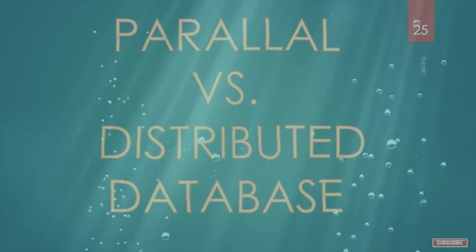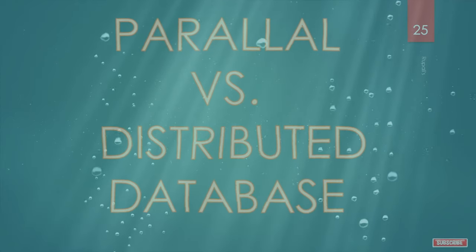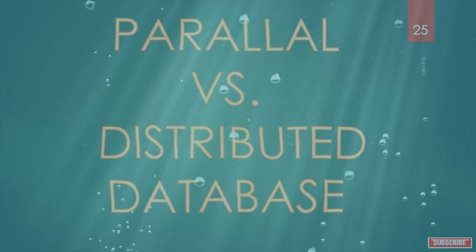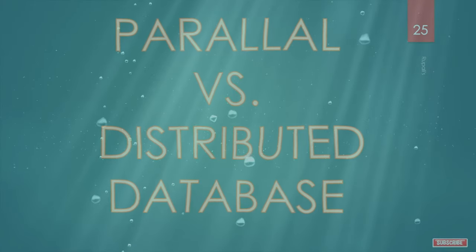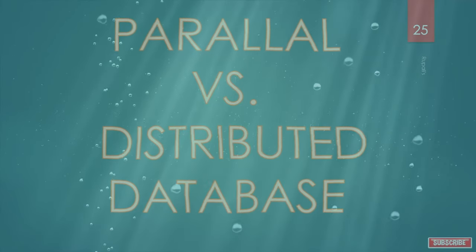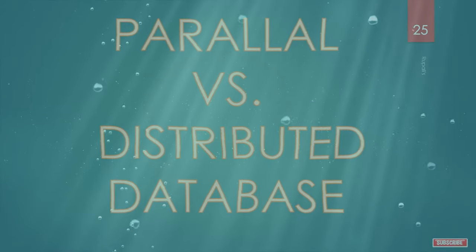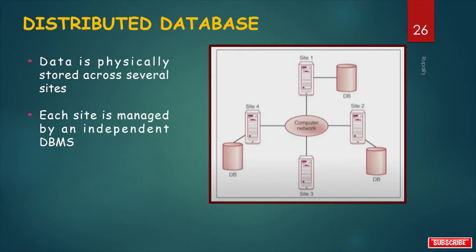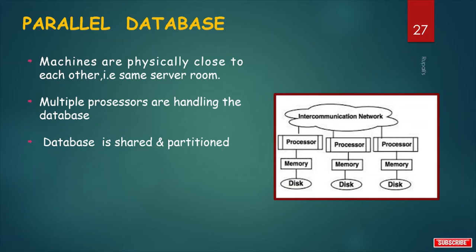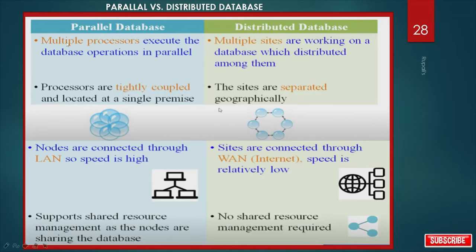Parallel vs. Distributed Database. The main difference is that a distributed database manages multiple logically interrelated databases distributed across a network, while a parallel database is a system where multiple processors execute and run simultaneously. In a distributed database, data is physically stored across several sites, each managed by an independent DBMS. In a parallel database, machines are physically close (same server room), multiple processors handle the database, and the database is shared and partitioned. In parallel databases, multiple processors execute operations in parallel; in distributed databases, multiple sites work on a database distributed among them.